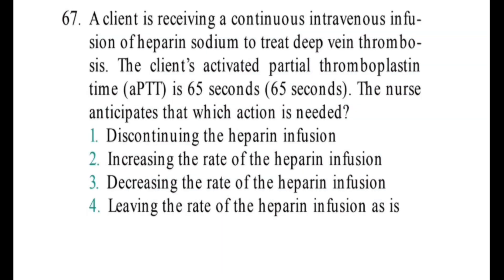Next question: A client is receiving a continuous intravenous infusion of heparin sodium to treat deep vein thrombosis. The client's activated partial thromboplastin time (APTT) level is 65 seconds. The nurse anticipates which action is needed? Options: 1. Discontinue the heparin infusion. 2. Increase the rate of heparin infusion. 3. Decrease the rate of heparin. 4. Leave the rate of heparin infusion as it is.